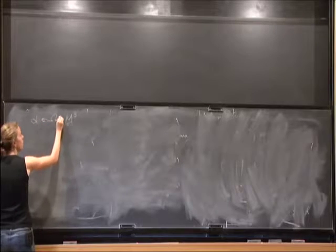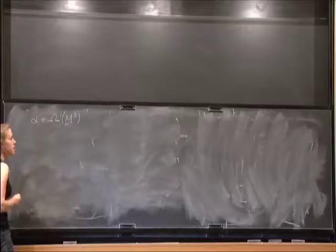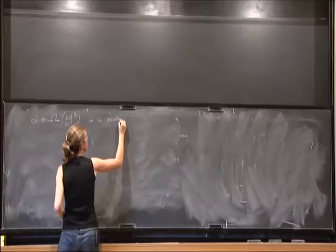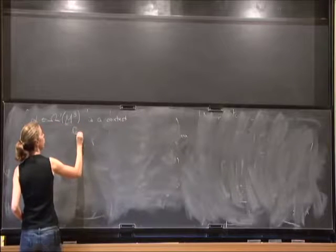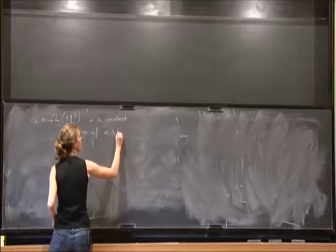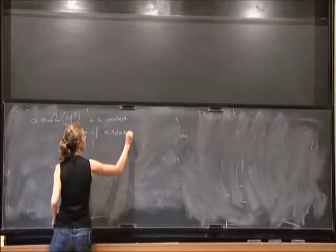If you have a one form on an orientable 3-manifold, then you say this is a contact form if it satisfies the relationship alpha wedge d alpha is greater than zero.